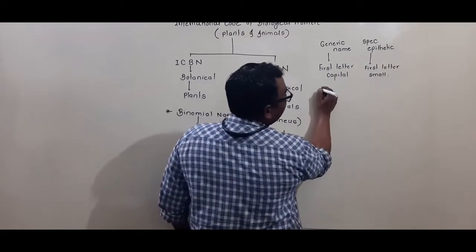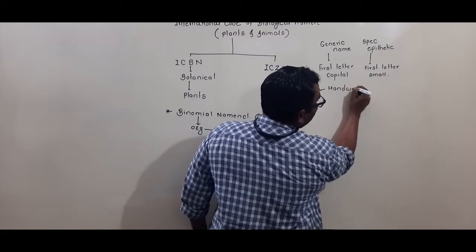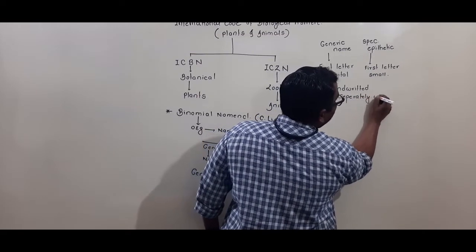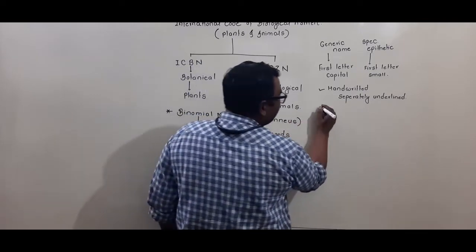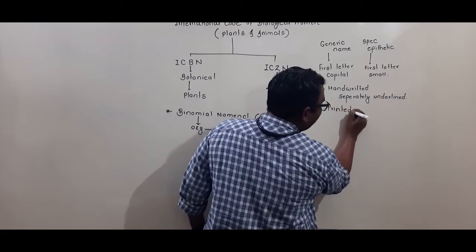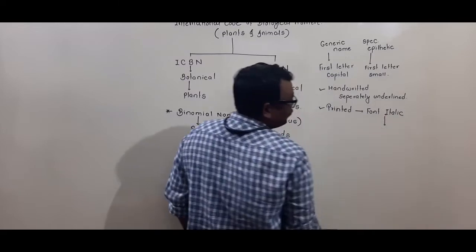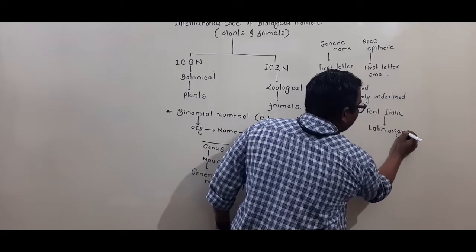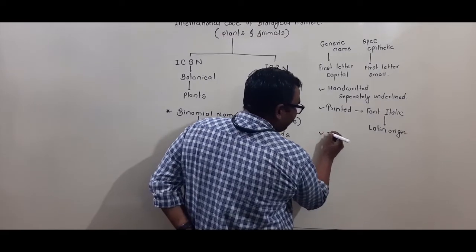Whenever binomial nomenclature names are handwritten, each word should be separately underlined — the generic name underlined separately and the specific epithet underlined separately. Whenever the binomial name is printed, it should be printed in italic font. This is because all binomial names are taken from Latin, and italics are used to indicate their Latin origin.